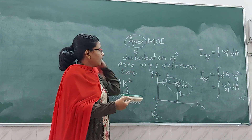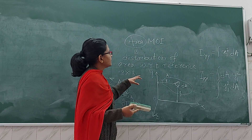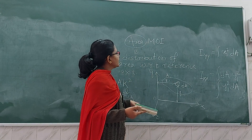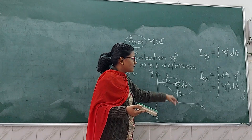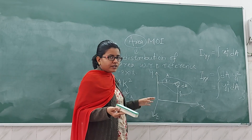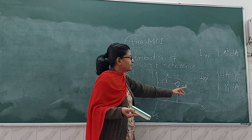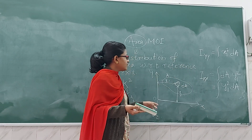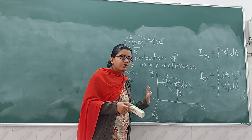We will now see the next type of area moment of inertia. Since we have three reference axes, there are three types of area moment of inertia. We have discussed moment of inertia about the X-X axis and Y-Y axis. Next we will see the moment of inertia with respect to the Z axis.